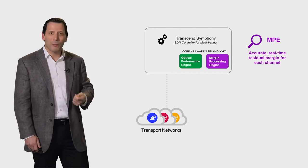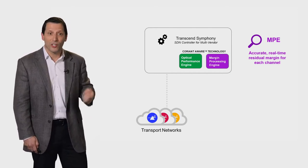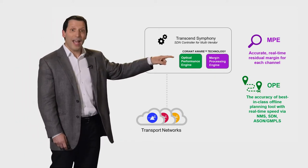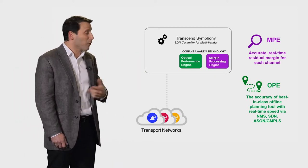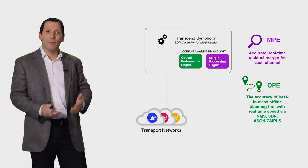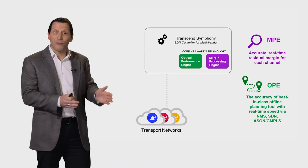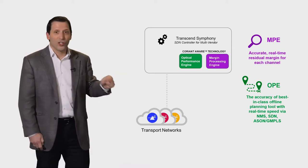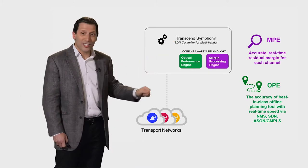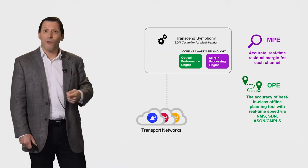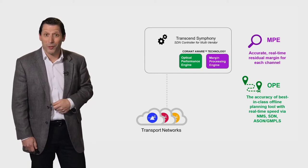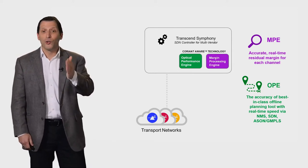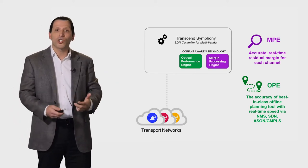This by itself is incredibly valuable information, and there are a lot of different ways you can use it. One way is when used in conjunction with the other half of Coriant Aware, which is the Optical Performance Engine. The Optical Performance Engine is a real-time wavelength planning solution. Instead of doing offline planning and estimating how far wavelengths can go and then applying those to the network, the Optical Performance Engine uses real-time information fed from the Margin Processing Engine to determine how far wavelengths can go and the speed at which those wavelengths can be tuned — especially useful when you have tunable wavelengths where you can tune modulation and baud rates. Using the MPE in conjunction with the OPE, you can really get the most out of every wavelength.